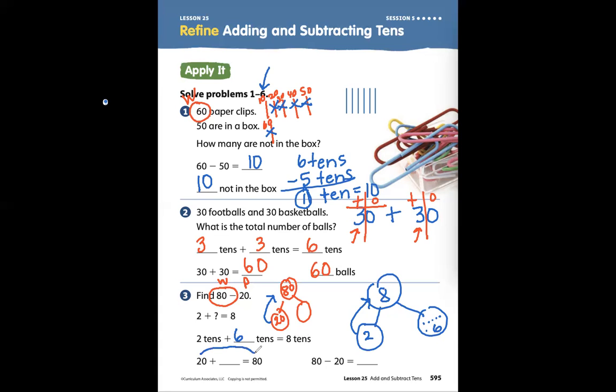So 20 up to 80: 20, 30, 40, 50, 60, 70, 80. 20 plus 60 equals 80. And 80 minus 20 is 60.